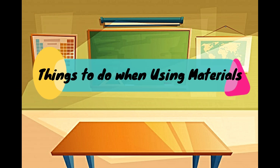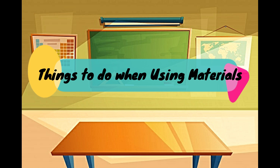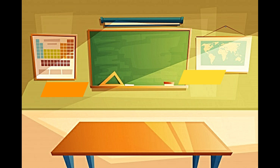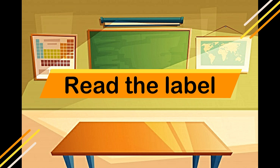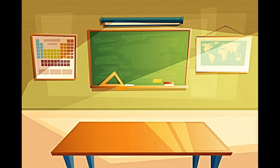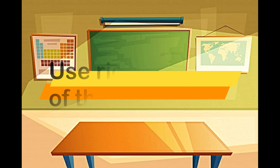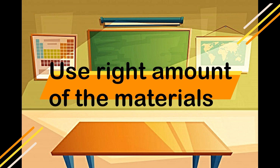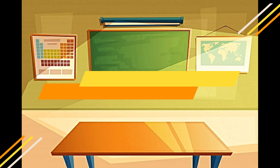What are the things we need to do when using materials? First, always read the label of the materials before using. Second, use the appropriate amount of materials as suggested by the manufacturer.